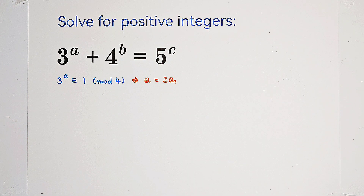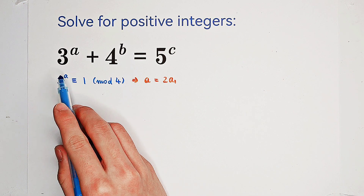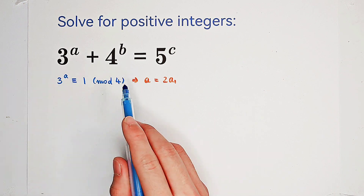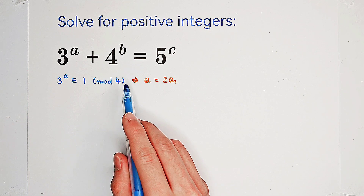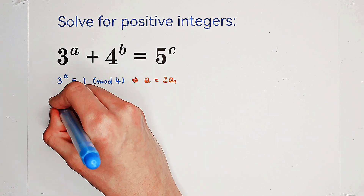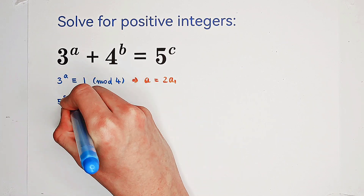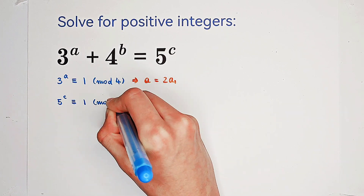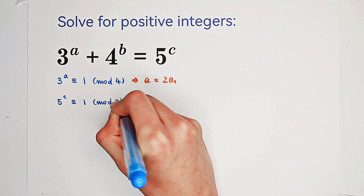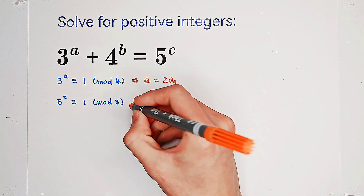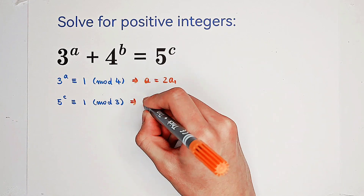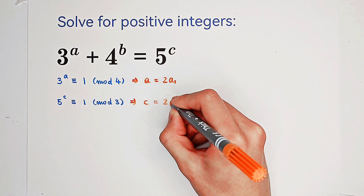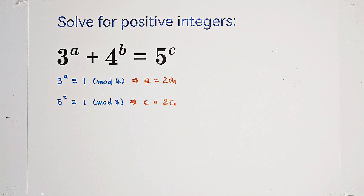We can also look at the residues mod 3 on both sides. 3 to the power of a is equivalent to 0 mod 3, and 4 to the power of b is equivalent to 1 mod 3. So it implies that 5 to the power of c is equivalent to 1 mod 3. This happens if and only if c is even, so c equals 2 times c1.